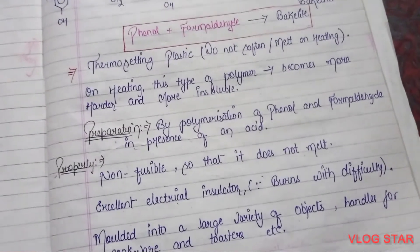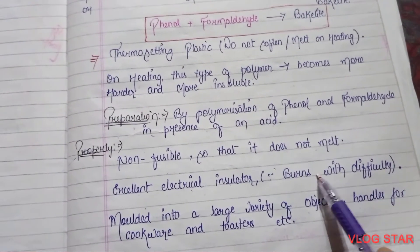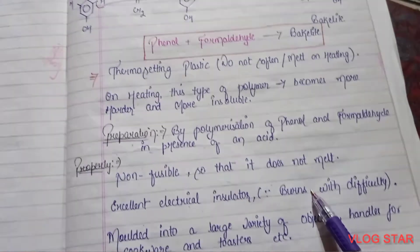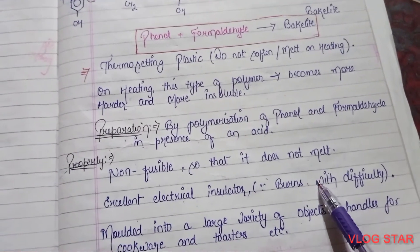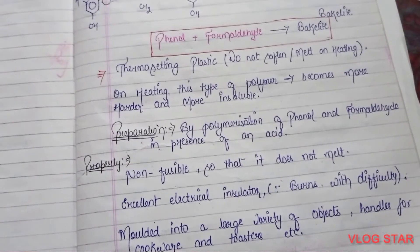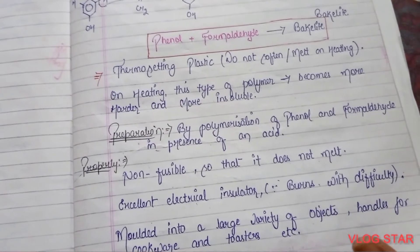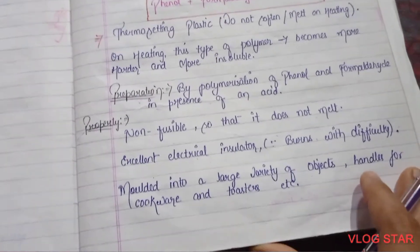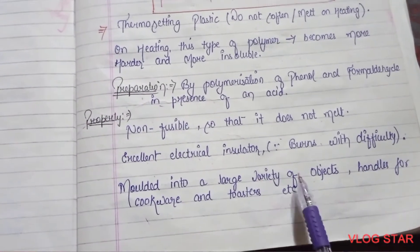Jo hamare ghar mein electric switches lage hote hain, switchboard pe — woh Bakelite ke bane hote hain aur woh bahut hard hote hain. Is liye hum log inhe thermosetting plastic bhi bolte hain. It burns with difficulty — jab hum is tarah ki polymer ko heat karte hain toh woh bahut hi mushkil se burn hoti hai.